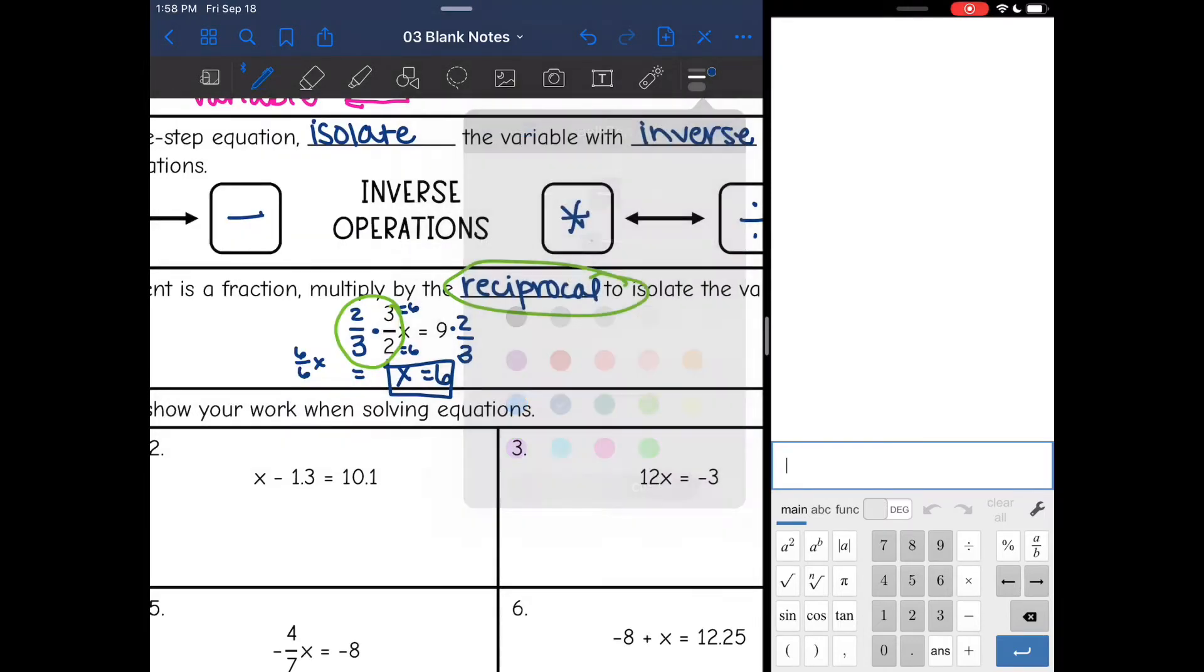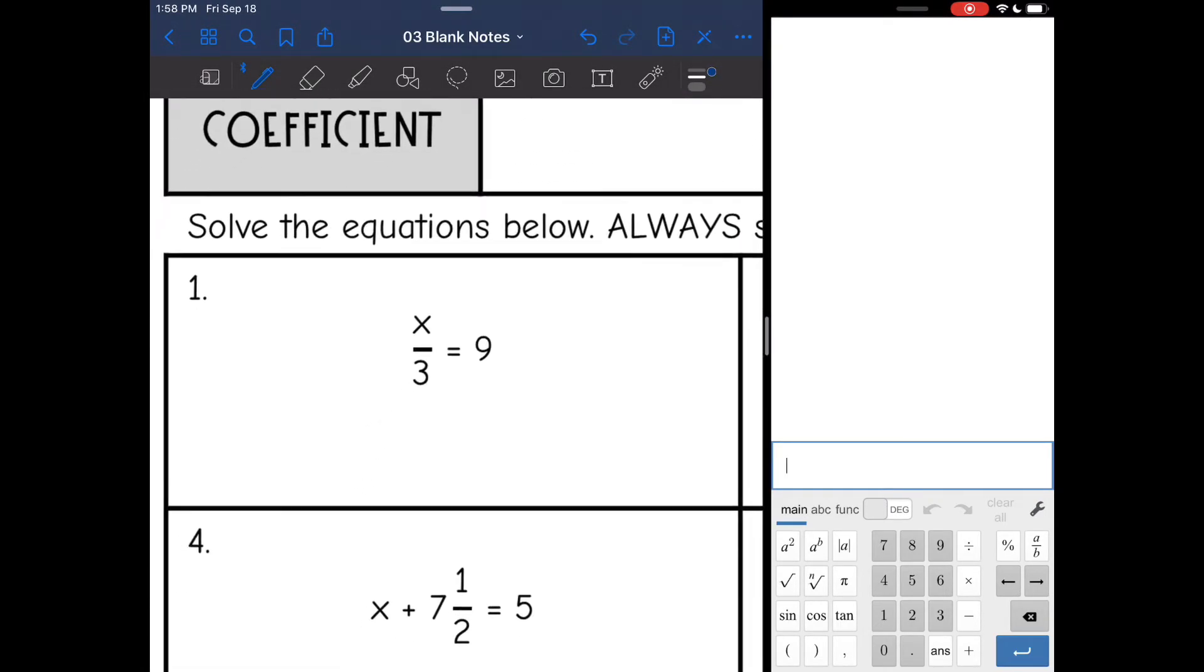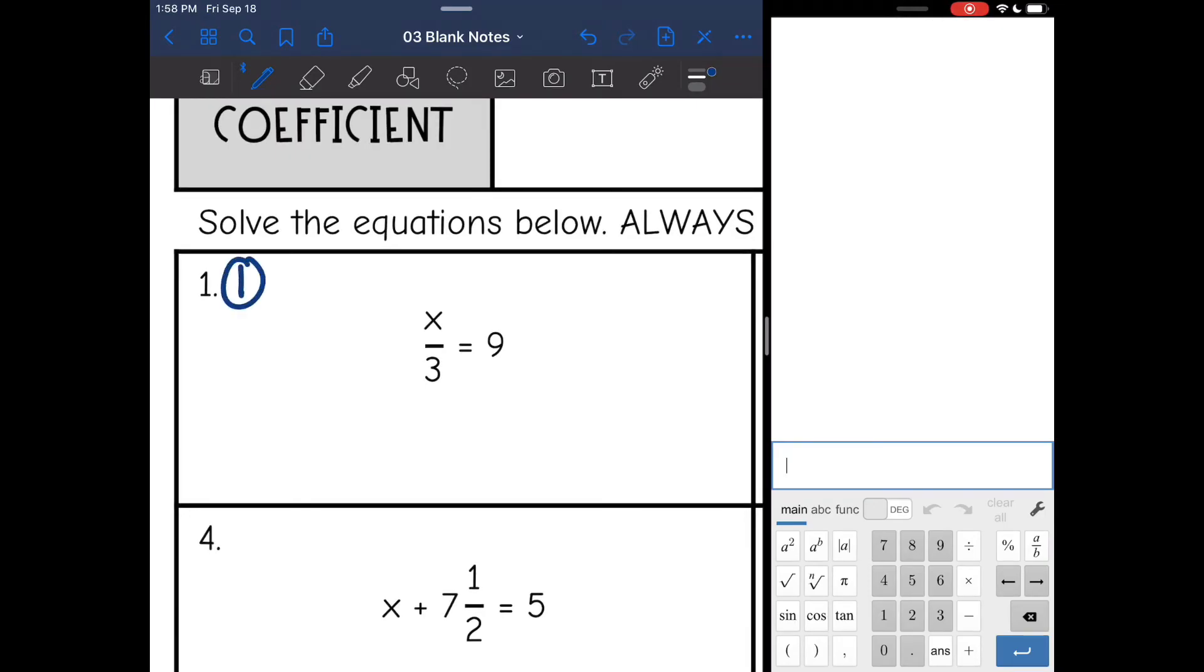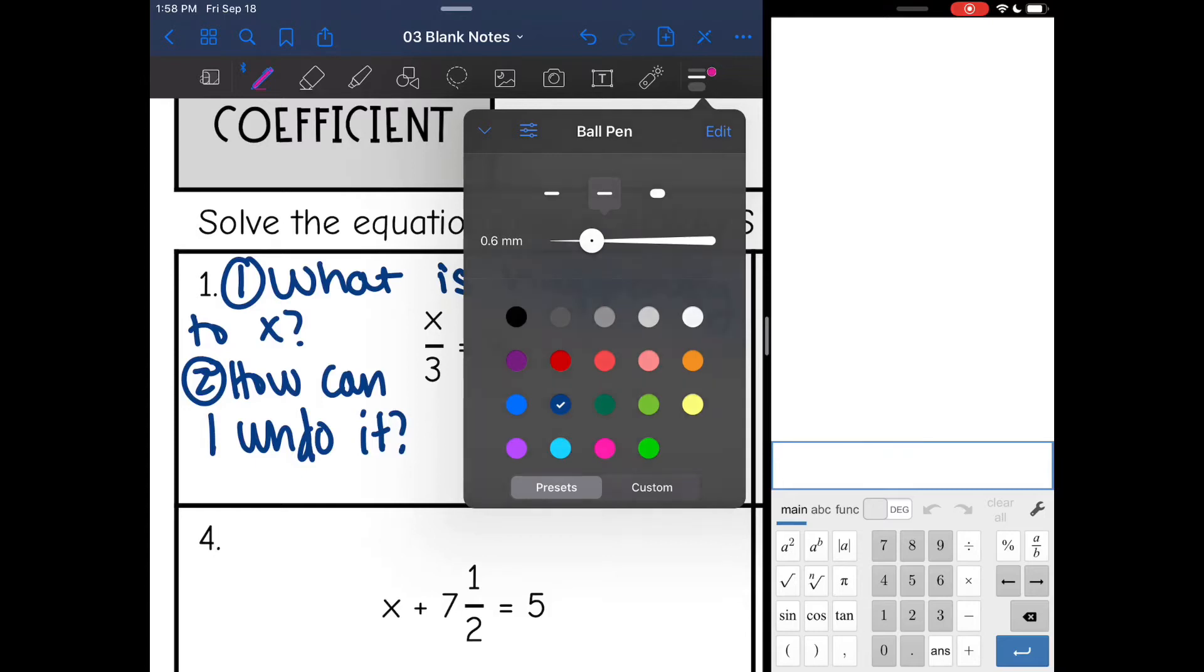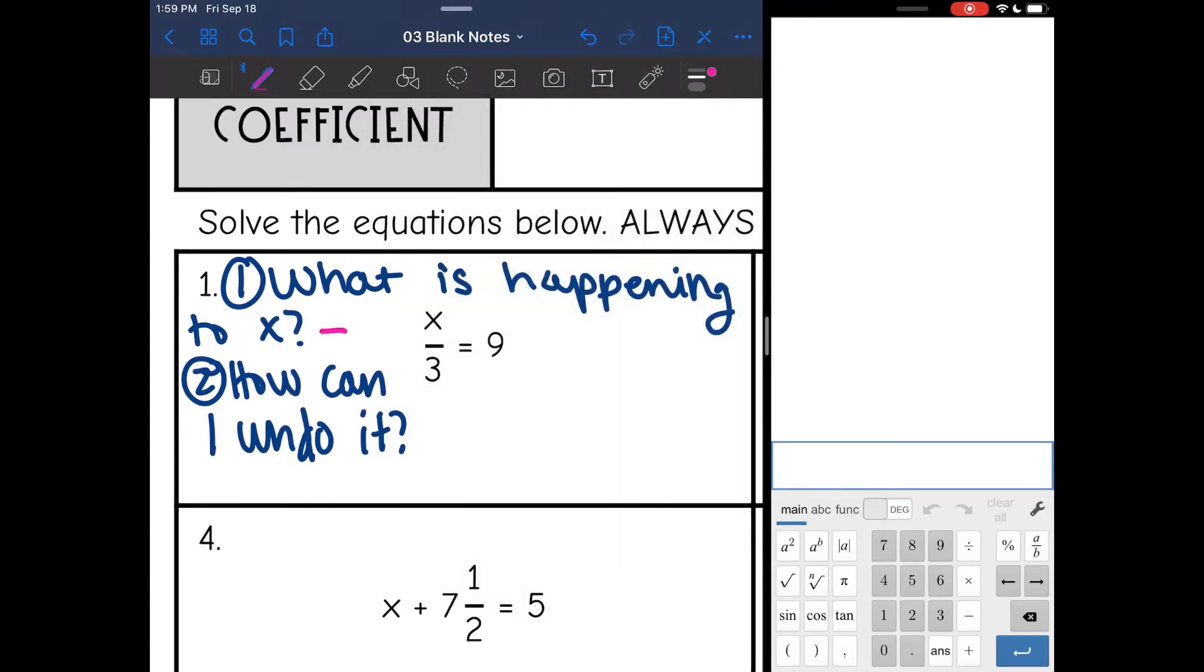Now let's get into some examples. You always want to ask yourself, what is happening to x? And then the second question is, how can I undo it? On this question, I have x divided by 3. What is happening to x? It's being divided by 3. And the opposite of division is multiplication. So how can I undo it? I can multiply by 3. So I'm going to multiply both sides by 3, and I get x equals 27.